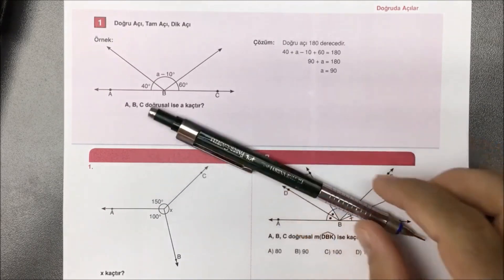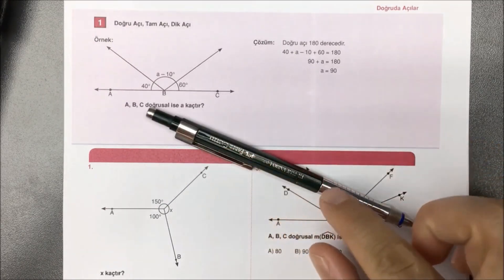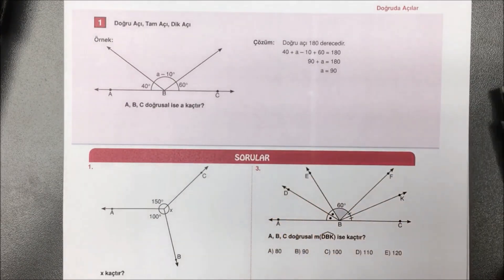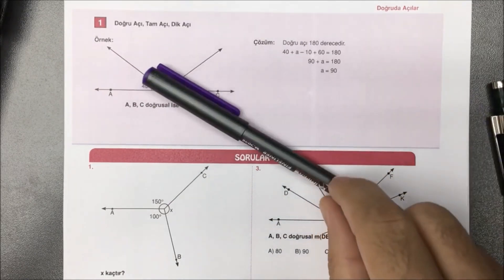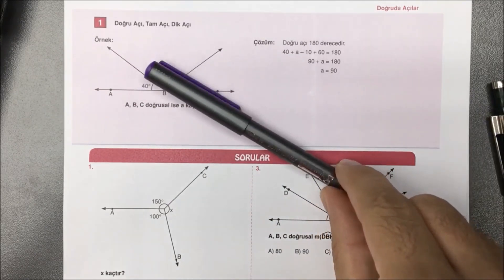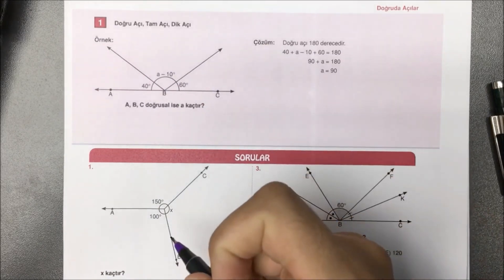Sürekli sorduğunuz için söylüyorum arkadaşlar: Bu kalem Faber Castell'in Vario diye geçen 07 kalemi. Onun dışında renkli kalemler kullanacağım. Gayet güzel yazıyor, tavsiye ederim.